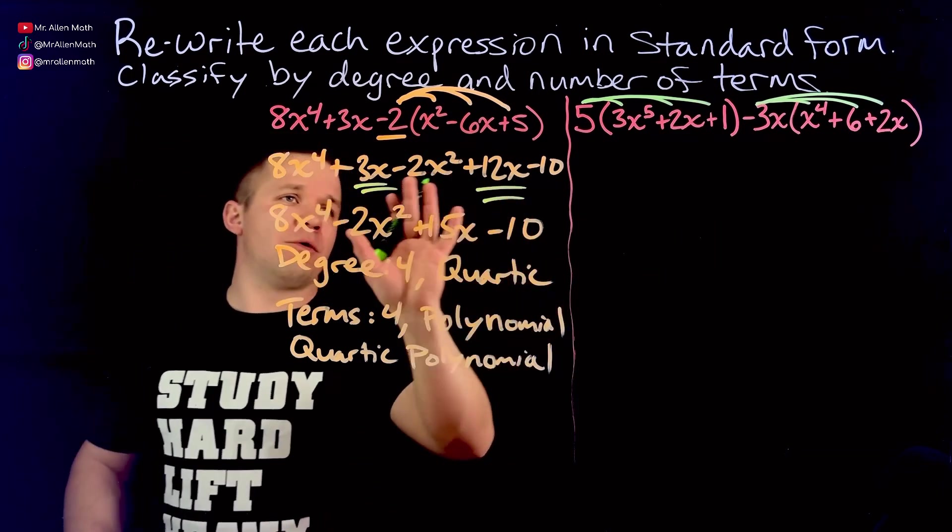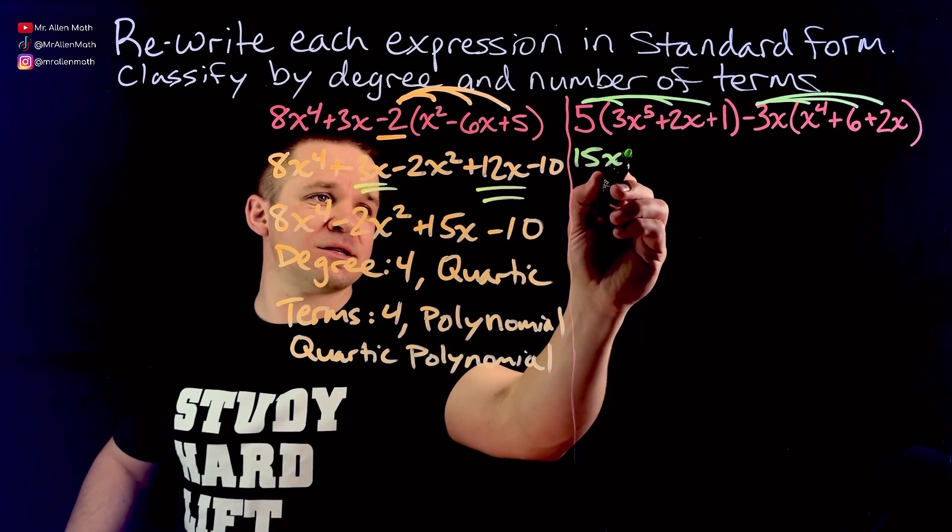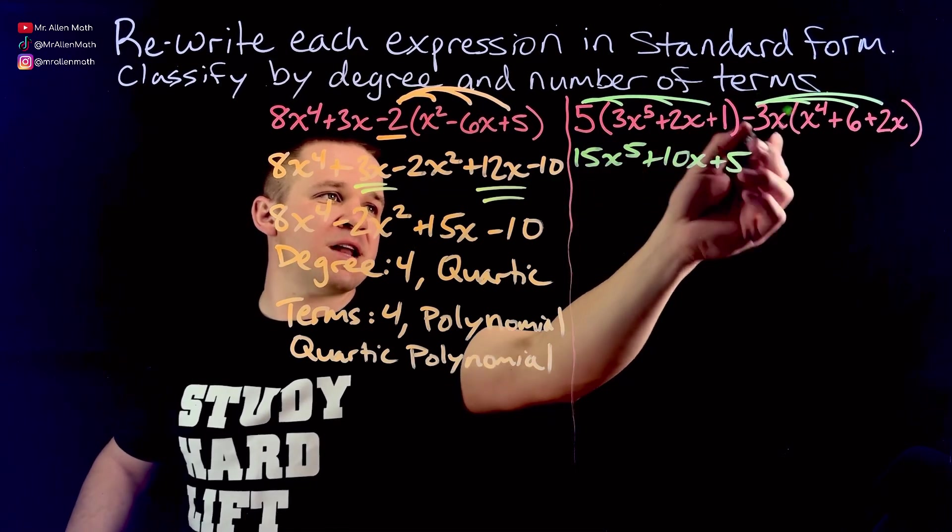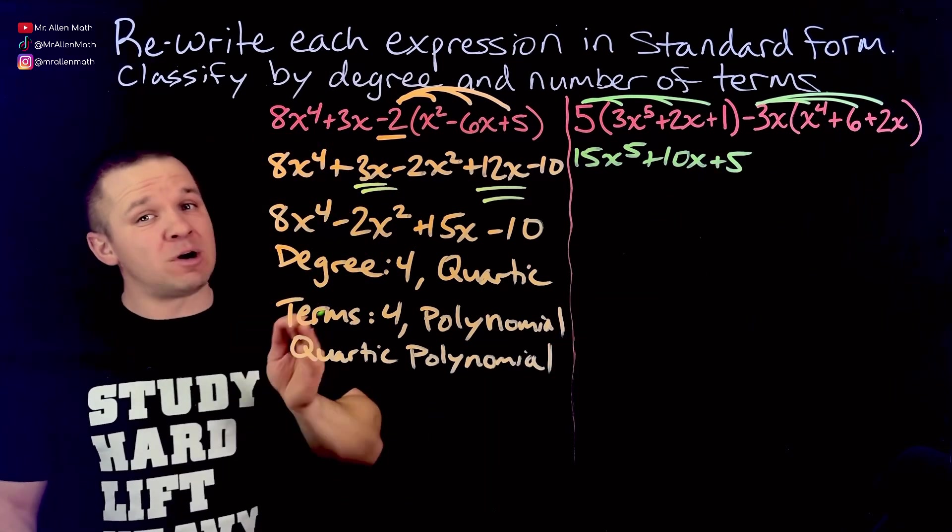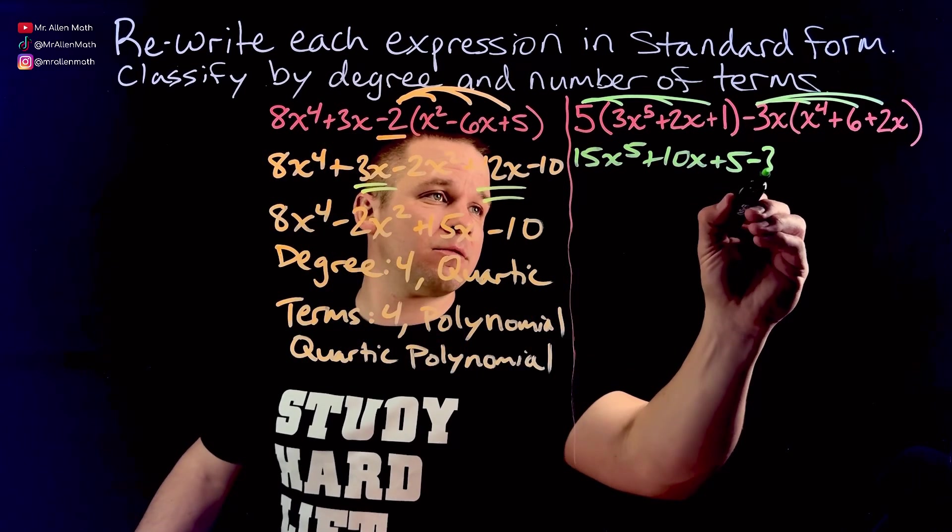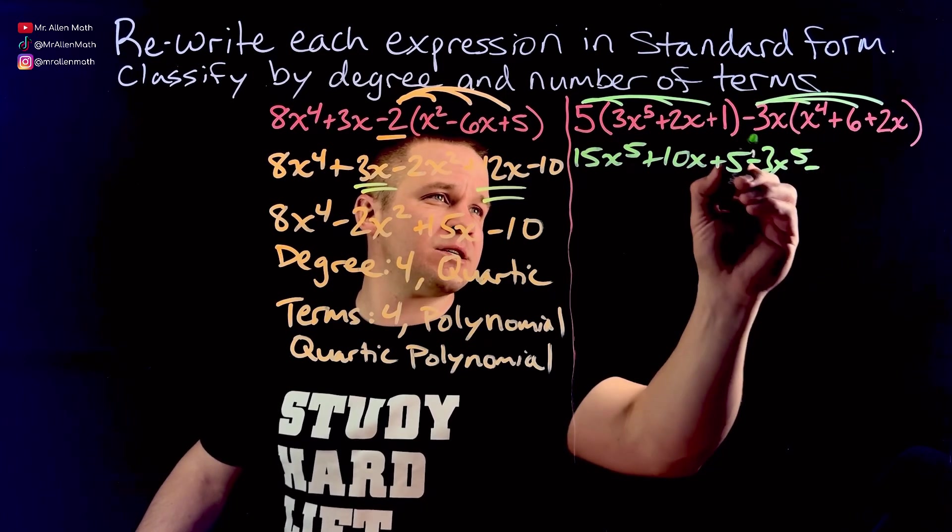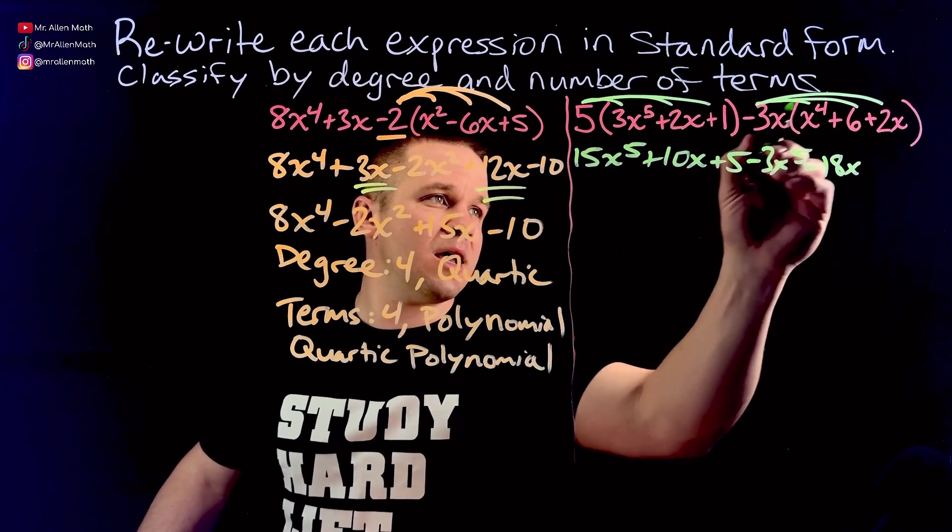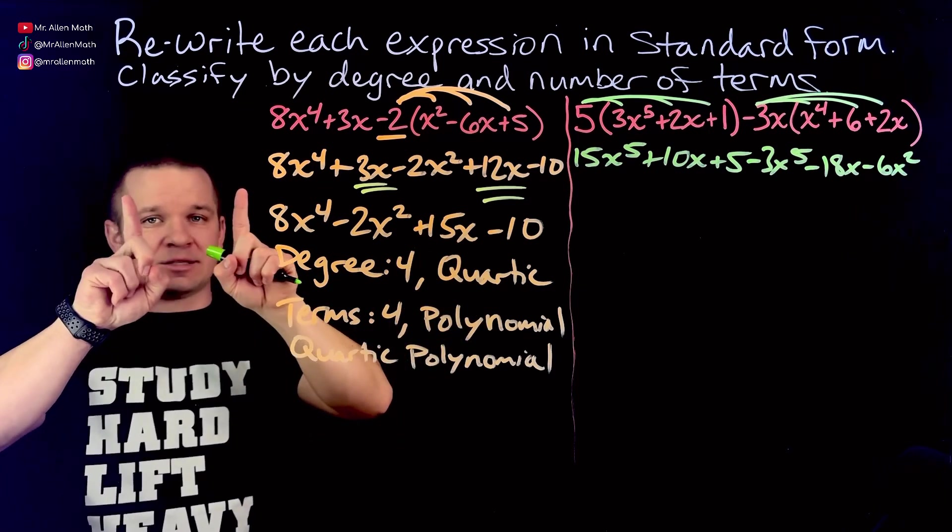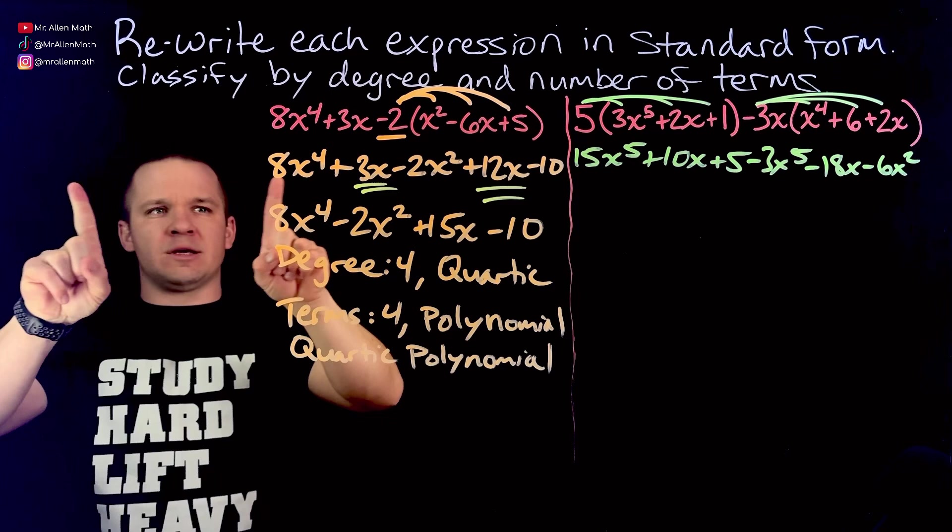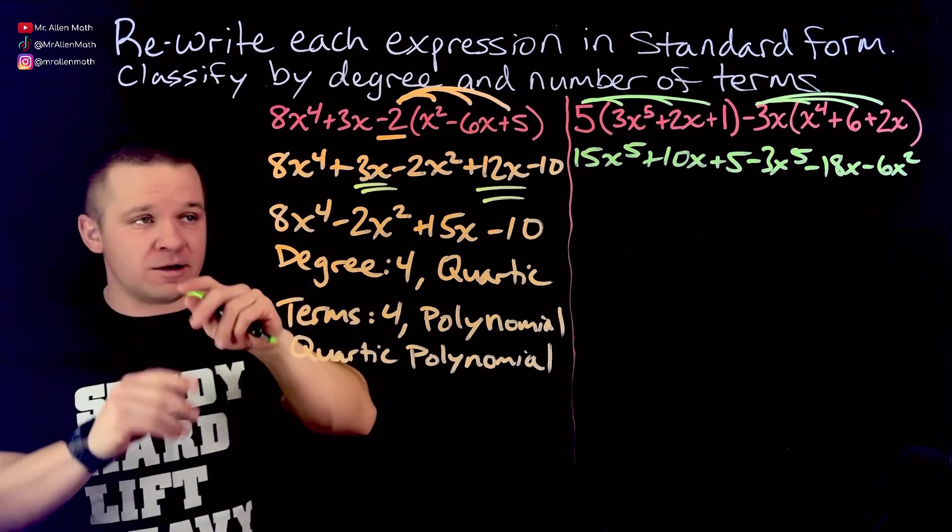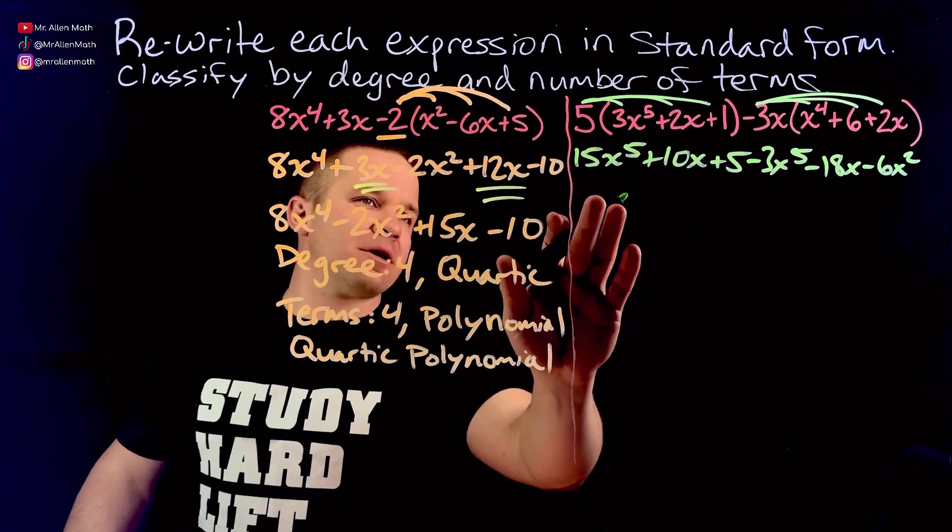It's a degree of zero which would be a constant, degree of one would be linear, degree of two is quadratic, three is cubic, four is quartic, five is quintic. And then six and beyond we usually just say sixth degree, seventh degree. Next one, that's a lot going on in this one. I got to distribute twice. I got to distribute this five to all three and the negative 3x to all three terms. So five times three is going to give me 15x to the fifth, then five times two is 10x, five times one is five.